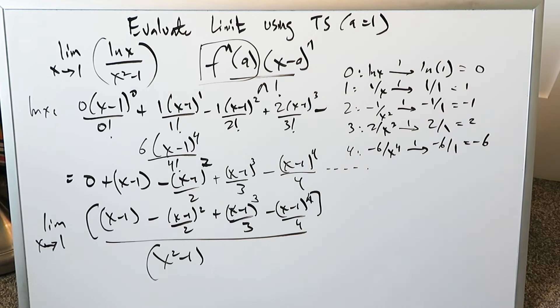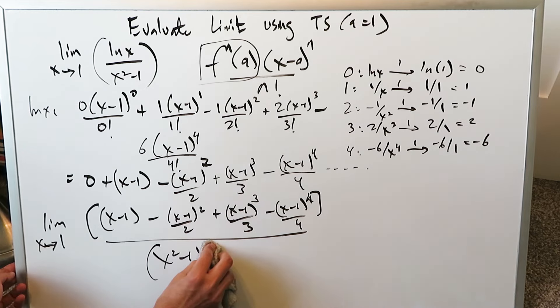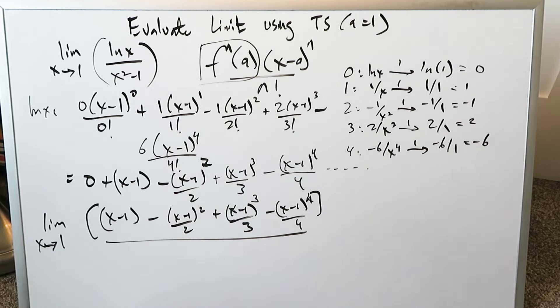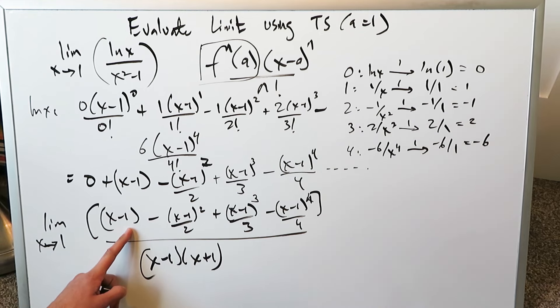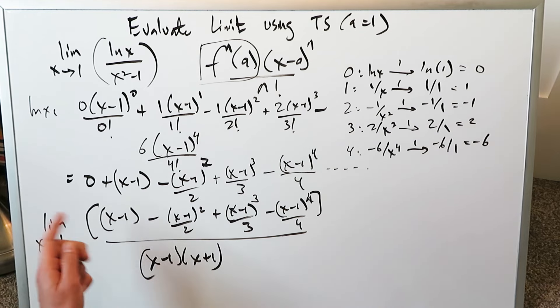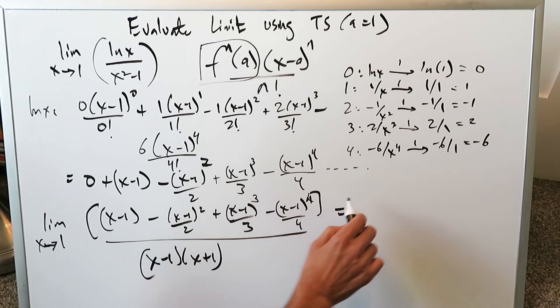Now look at your denominator and rewrite it in a different way. Write it in its factors. x squared minus 1 equals x minus 1 times x plus 1. Why am I doing it? Because I can isolate an x minus 1 from the numerator expression and I can remove this denominator x minus 1.